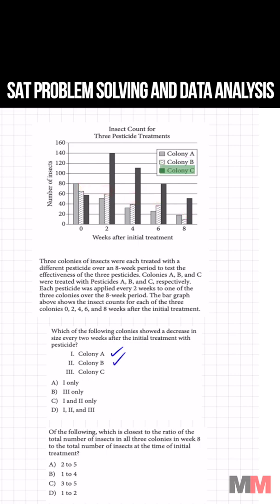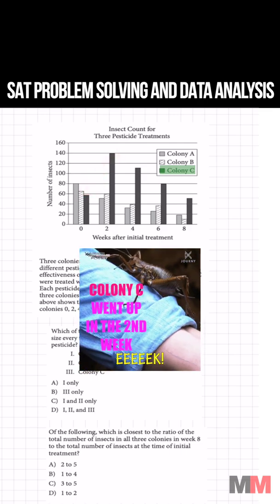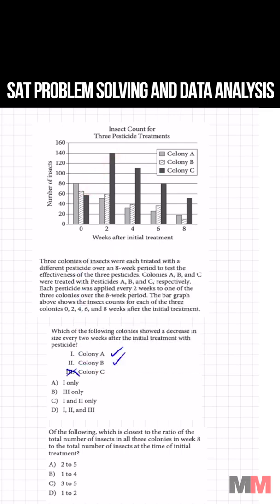If you look at C, the darker colony, from zero to two weeks it went up. So you know that that is not part of your answer. A and B is choice C.